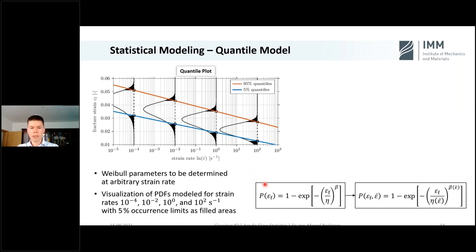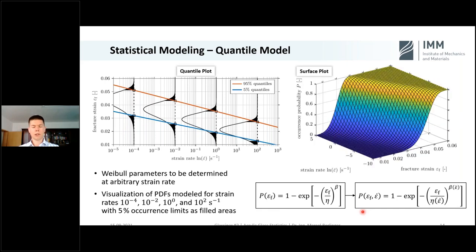We take these regression lines and for four exemplary strain rates, we cut our two regression lines. For the first strain rate, we get the 5% quantile. For the second, we get the 95% quantile. These are two points of our two-parameter Weibull distribution. As the name indicates, we only need two points to define the two parameters of the Weibull distribution. That allows us to go at each arbitrary position and define our two-parameter Weibull distribution. Here shown in the equation again, our occurrence probability is, in addition to the fracture strain, dependent on the strain rate. That gives us a three-dimensional dependency we can show in this surface plot.